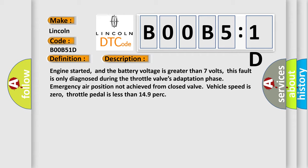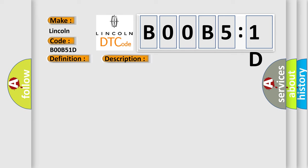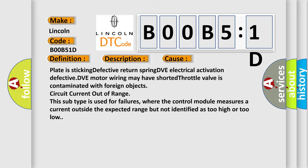This diagnostic error occurs most often in these cases: plate is sticking, defective return spring, DVE electrical activation defective, DVE motor wiring may have shorted, throttle valve is contaminated with foreign objects, circuit current out of range. This subtype is used for failures where the control module measures a current outside the expected range but not identified as too high or too low.